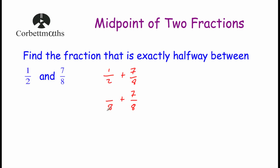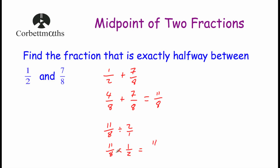Seven-eighths will stay as seven-eighths. To get from two to eight we multiply by four, so we multiply the numerator by four — one-half becomes four-eighths. Adding four-eighths and seven-eighths gives us eleven-eighths. Now we divide by two: eleven over eight divided by two over one is the same as eleven over eight multiplied by one-half. Eleven times one is eleven, and eight times two is sixteen. So the fraction exactly halfway between one-half and seven-eighths is eleven-sixteenths.